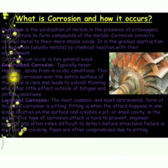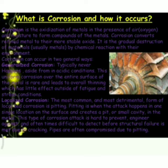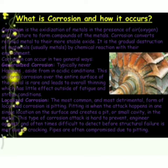Now we will discuss what is corrosion and how it occurs. The process of slowly eating up of metals due to attack of atmospheric gases such as oxygen, carbon dioxide, hydrogen sulfide, and water vapor on the surface of a metal, converting the metal into oxides, carbonates, sulfides, etc., is known as corrosion.